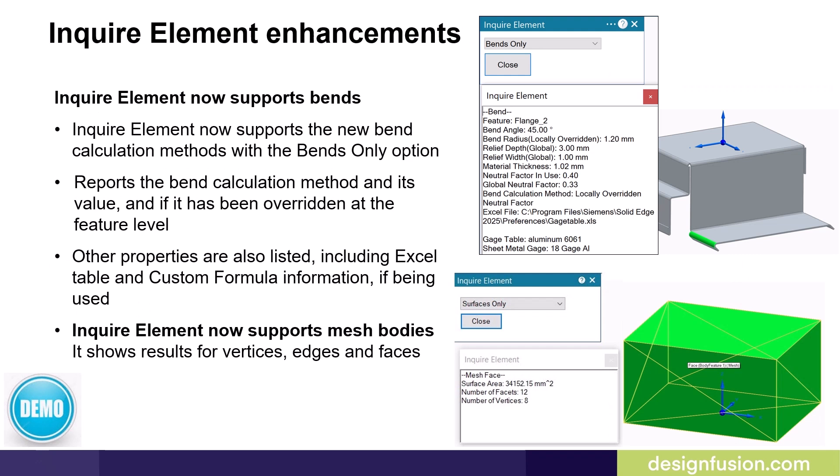The inquire element command now lists the new bend calculation methods when the bends only option is used. It reports the bend calculation method, its value, and whether it has been overridden at the feature level. Other properties are also listed, including the Excel table and custom formula information if being used. The inquire element command also now supports mesh bodies and shows results for vertices, edges, and faces.